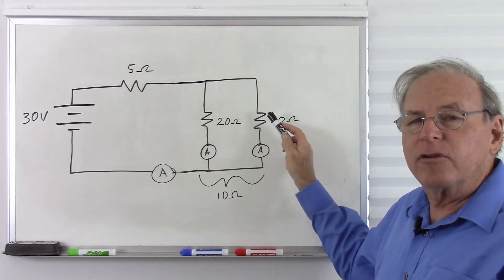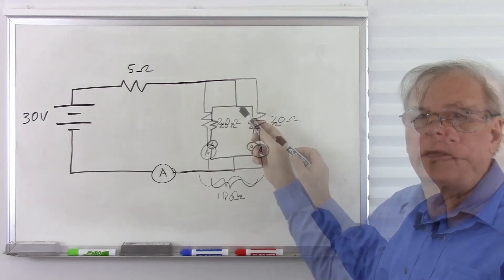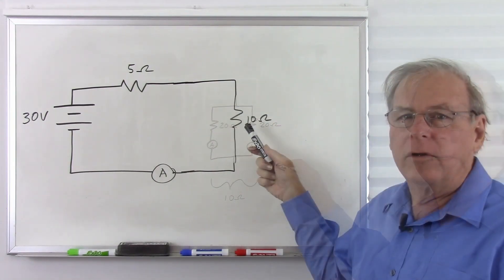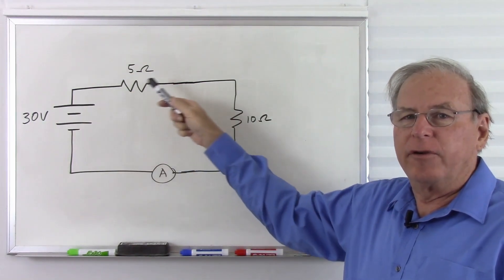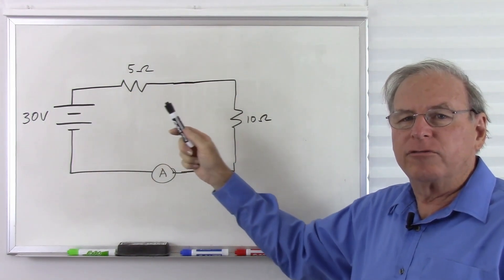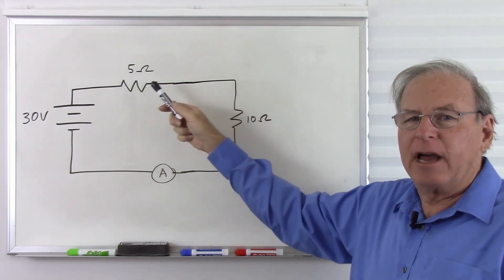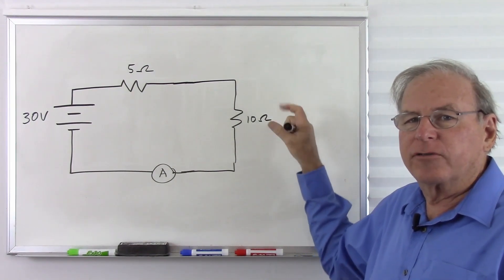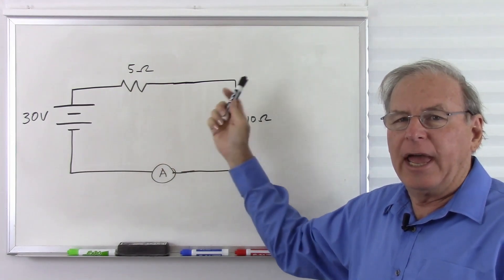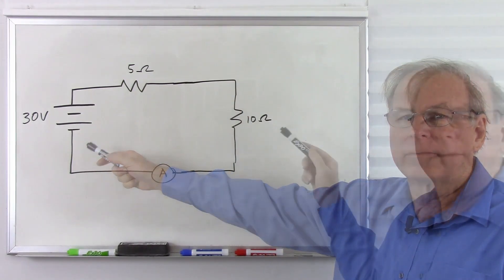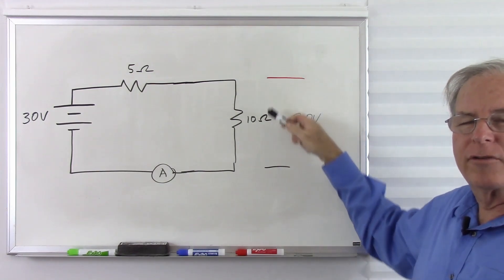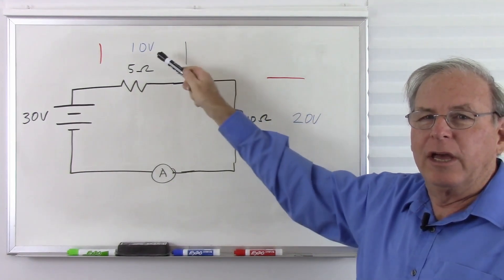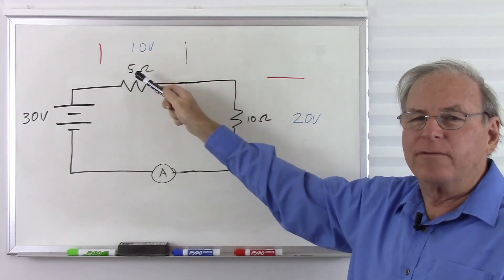Zooming out, the two 20 ohm resistors act together like a single 10 ohm resistor, giving us a series circuit with 5 ohms and 10 ohms. The 10 ohm section has twice the resistance of the 5 ohm section, so it gets twice the voltage. That means 20 volts across the 10 ohm resistor and 10 volts across the 5 ohm resistor — 20 plus 10 equals 30. It works out.